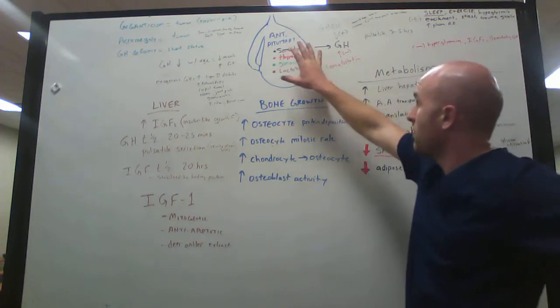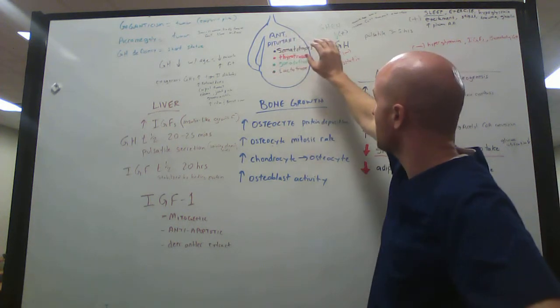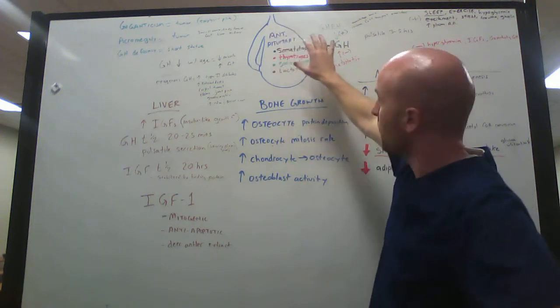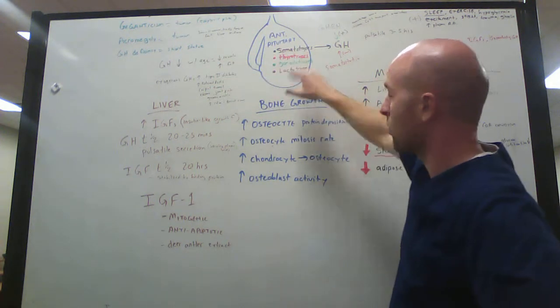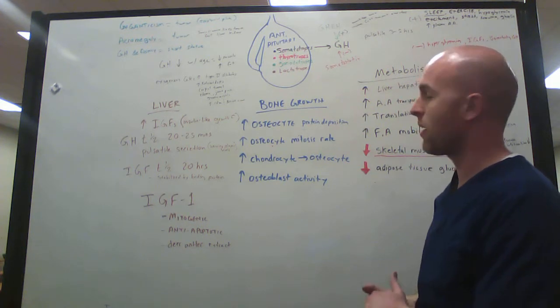Starting out, we understand that we have the pituitary gland, also called the hypophysis. The hypophysis has an anterior and a posterior portion. The anterior portion is called the adenohypophysis, and the posterior portion is called the neurohypophysis.